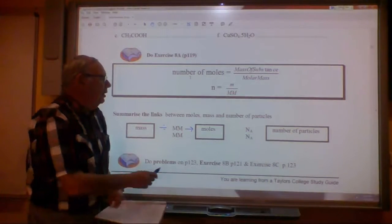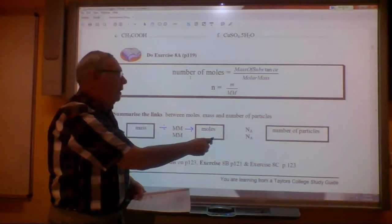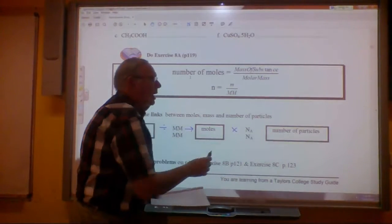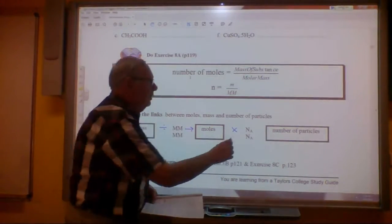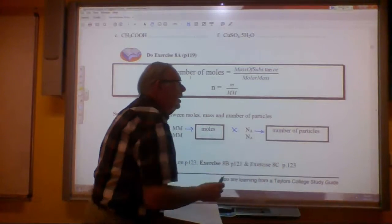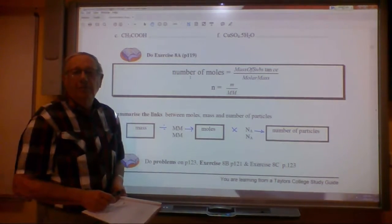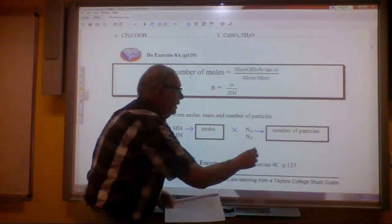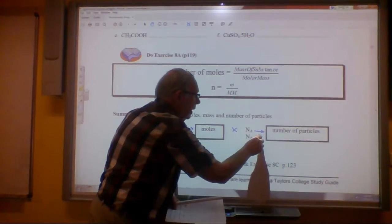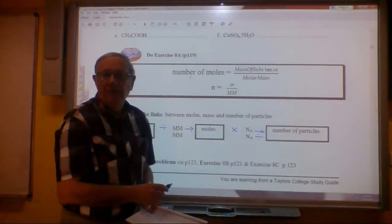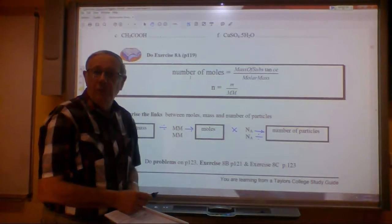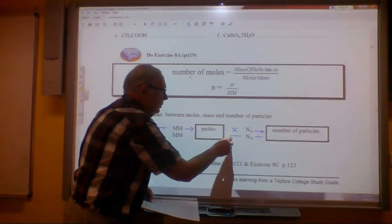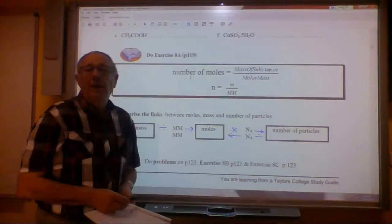And if we know the number of moles, then we can multiply that by Avogadro's number, and that will give us the number of particles. If we know the number of particles, what we can do is divide by Avogadro's number, 6.02 by 10 to 23, and that will produce the number of moles.